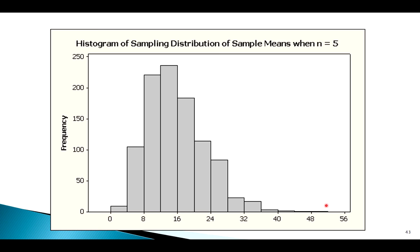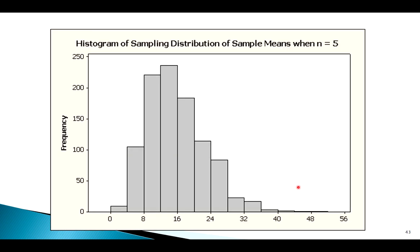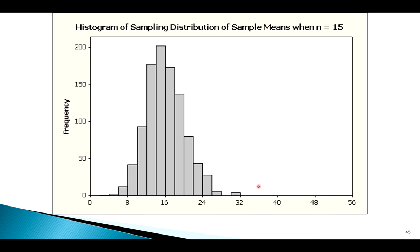Here's my exponential population. I took a thousand samples of size 5, graphed their sample means — and for shape, I don't think it looks exactly normal. It looks kind of right skewed. We can see some of that original population shape in the sampling distribution for small samples. Center-wise, we know the center was 16, and this center looks to be about 16. Spread is definitely less spread out. Let's bump the sample size up to 15: a thousand samples of size 15, graphing their means — this is looking a little more normal, maybe not perfect, but more normal, and the mean is about 16. Standard error is getting smaller.